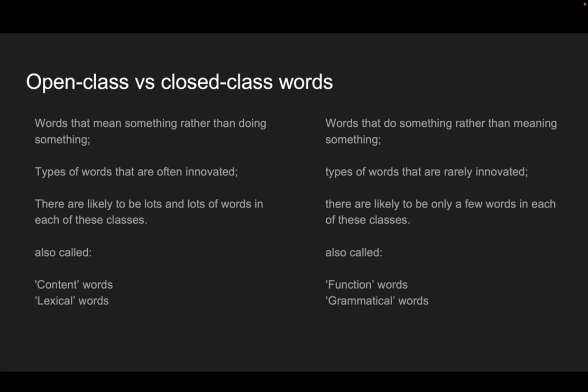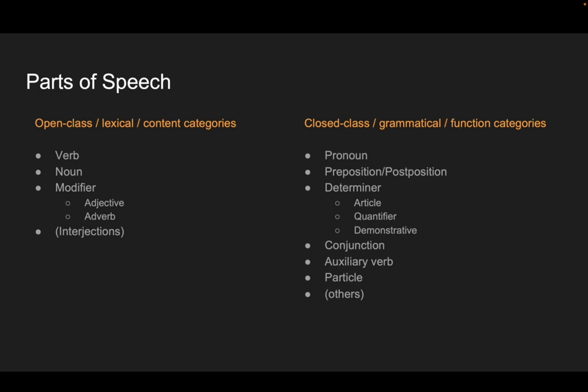Languages also have little words — the closed class words — which tend to be words that don't necessarily mean anything, but they do things. They're necessary when you start putting words together into sentences. You don't usually get new ones of these. There might be only a small number of each type in your language. You need them, but you don't always know why. We sometimes call closed class words function words or grammatical words.